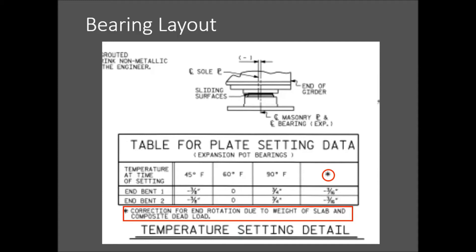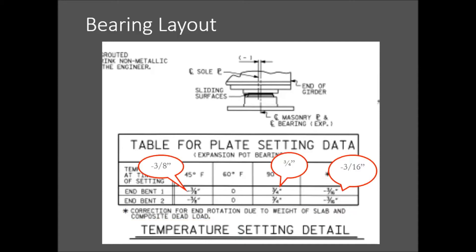The correction for end rotation should always be negative or should always be in the same direction as the lower temperature correction. Here we see that the correction for 45 degrees Fahrenheit and the correction for end rotation are both negative, which is correct. Make sure you use the correct information from the table which corresponds to the ambient temperature at the time you are setting and adjusting the bearings.